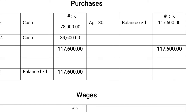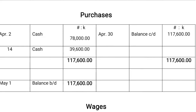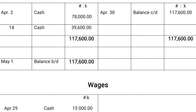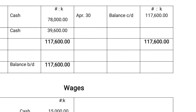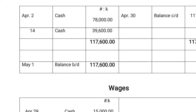Now let's move to purchases. I told you that purchases appear at the credit side of the cash book, so it's going to appear at the debit side now. So we have April 2nd, cash, 78,000 Naira. April 14th, 39,600 Naira. We add everything up and get 117,600. Since the entry is more than one, to have the same balances, we have April 30th as balance carried down: 117,600, to have the same on the debit side and the credit side. It's still going to appear at the debit side again — that is May 1st, balance brought down, 117,600.